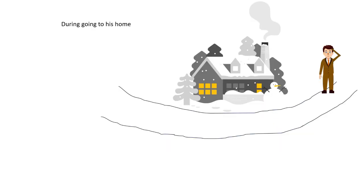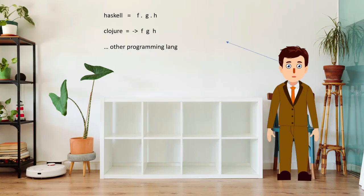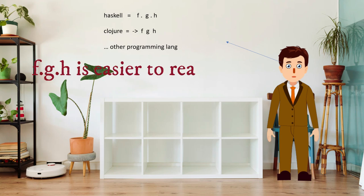Professor Leo goes home thinking about how to solve this problem for his students — how to make the syntax more attractive. He starts exploring other languages like Haskell and Clojure. In Haskell there is a dot operator used to compose functions, and in Clojure a similar symbol is used. In R you call functions in a pipe syntax, which is slightly different from Haskell but easier to read. We are basically composing three functions f, g, h.